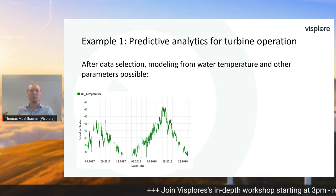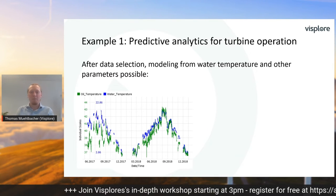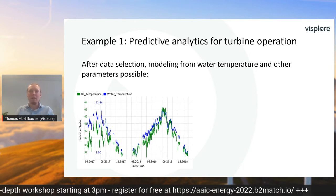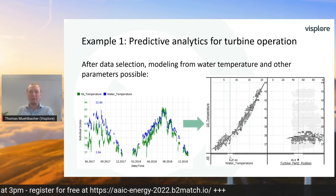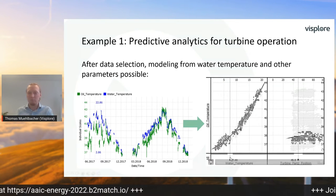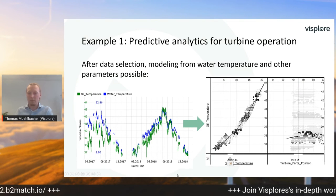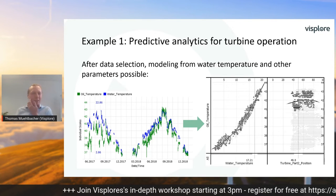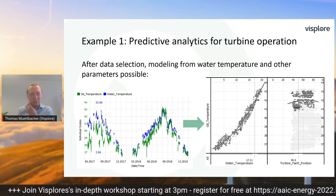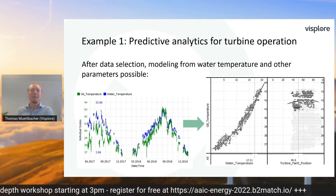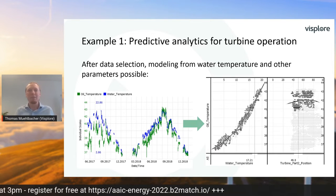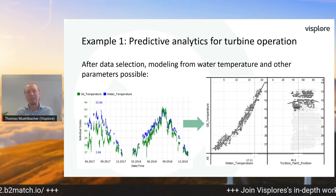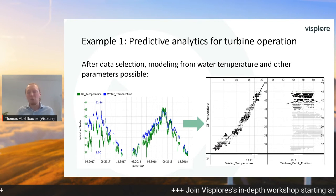When you select only the green points, you can start modeling. The water temperature is a good input variable here, and together with other variables it was possible to train an explainable model like we saw in the beginning. You can see again how changes impact this model. In the afternoon session I will actually perform the data selection and modeling live in a demo. But the message here is that the explainable model is just part of the whole story — without domain experts carefully selecting the relevant data, modeling would not have been possible here.